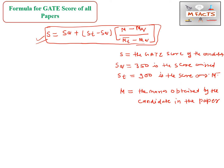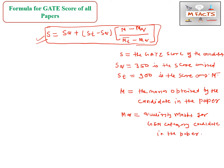Before doing an example we will see the remaining terms. Mq is the qualifying marks for the general category candidate in the paper — we can also call this the cut-off marks. In most cases this value is 25 for all branches.